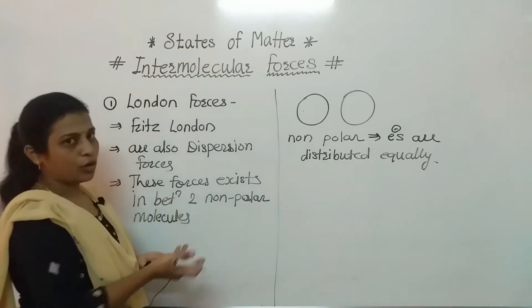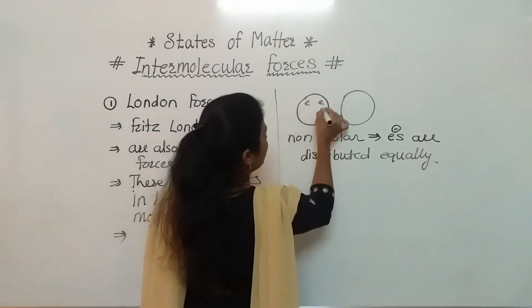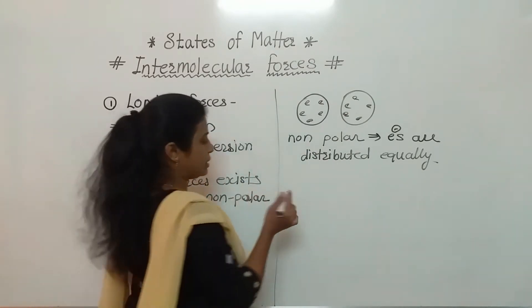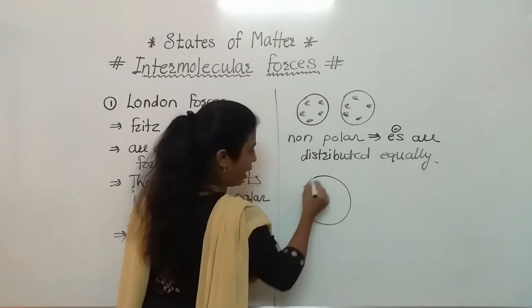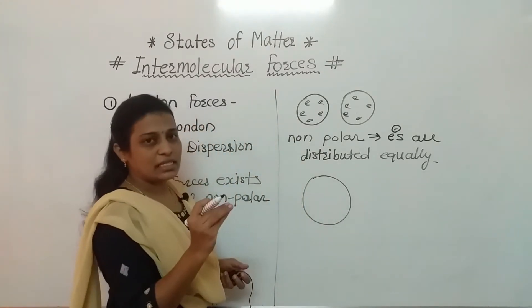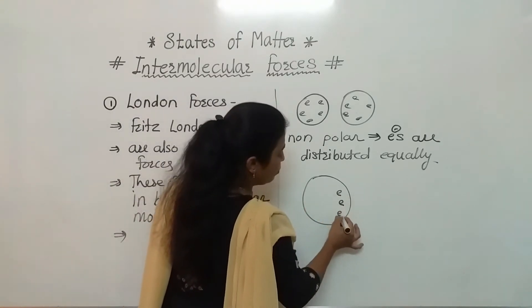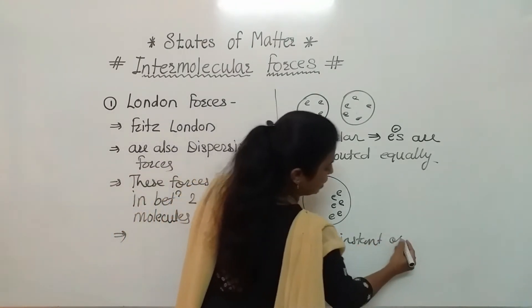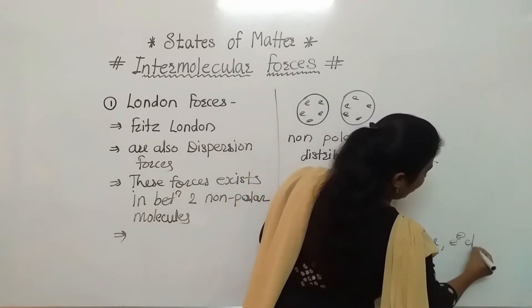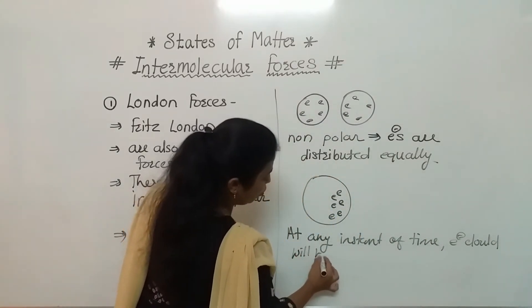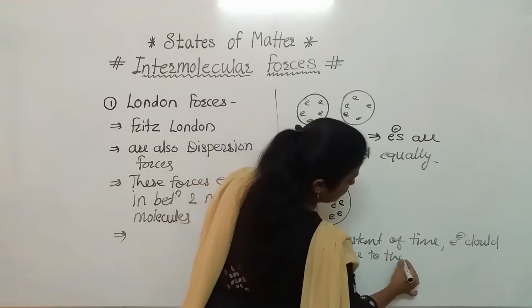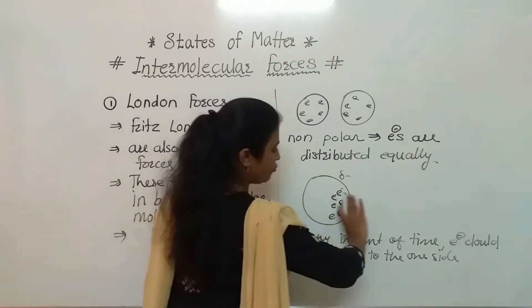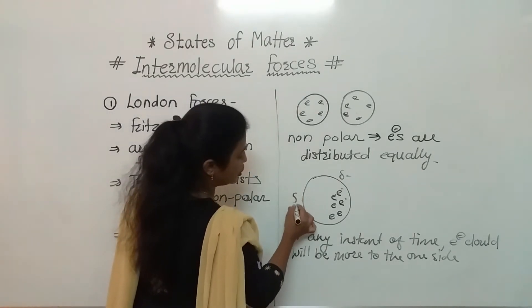In two non-polar molecules, electrons are distributed equally. But at any instant of time, the electron cloud can be more concentrated at one end. At that instant, that portion becomes partially negative, and the other end becomes partially positive.